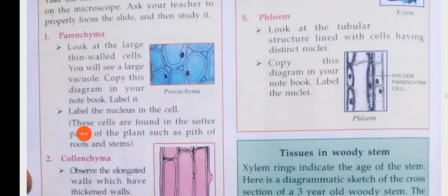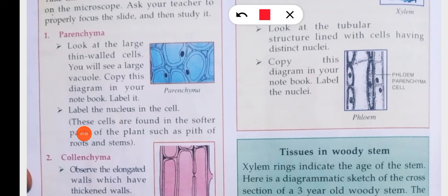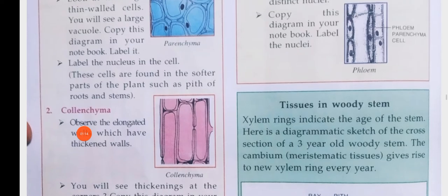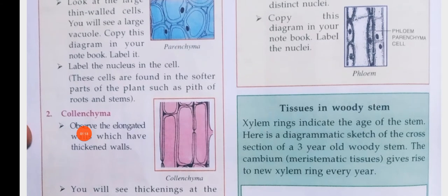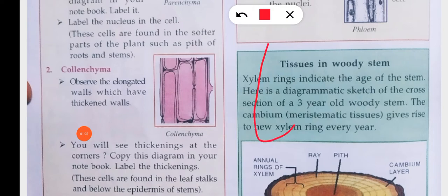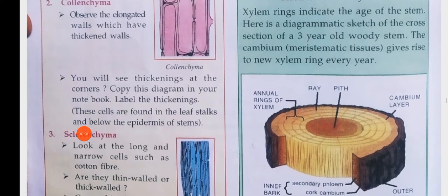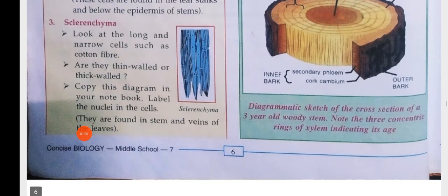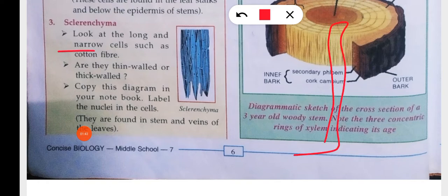When you look at parenchyma, you will see large thin-walled cells with a large vacuole. Copy these diagrams in your notebook and label the nucleus in the cell. These cells are found in softer parts of the plant. Now for collenchyma — they are elongated and thick-walled, with thickening at the corners. You will see thin-walled and thick-walled regions. Copy these diagrams in your notebook.